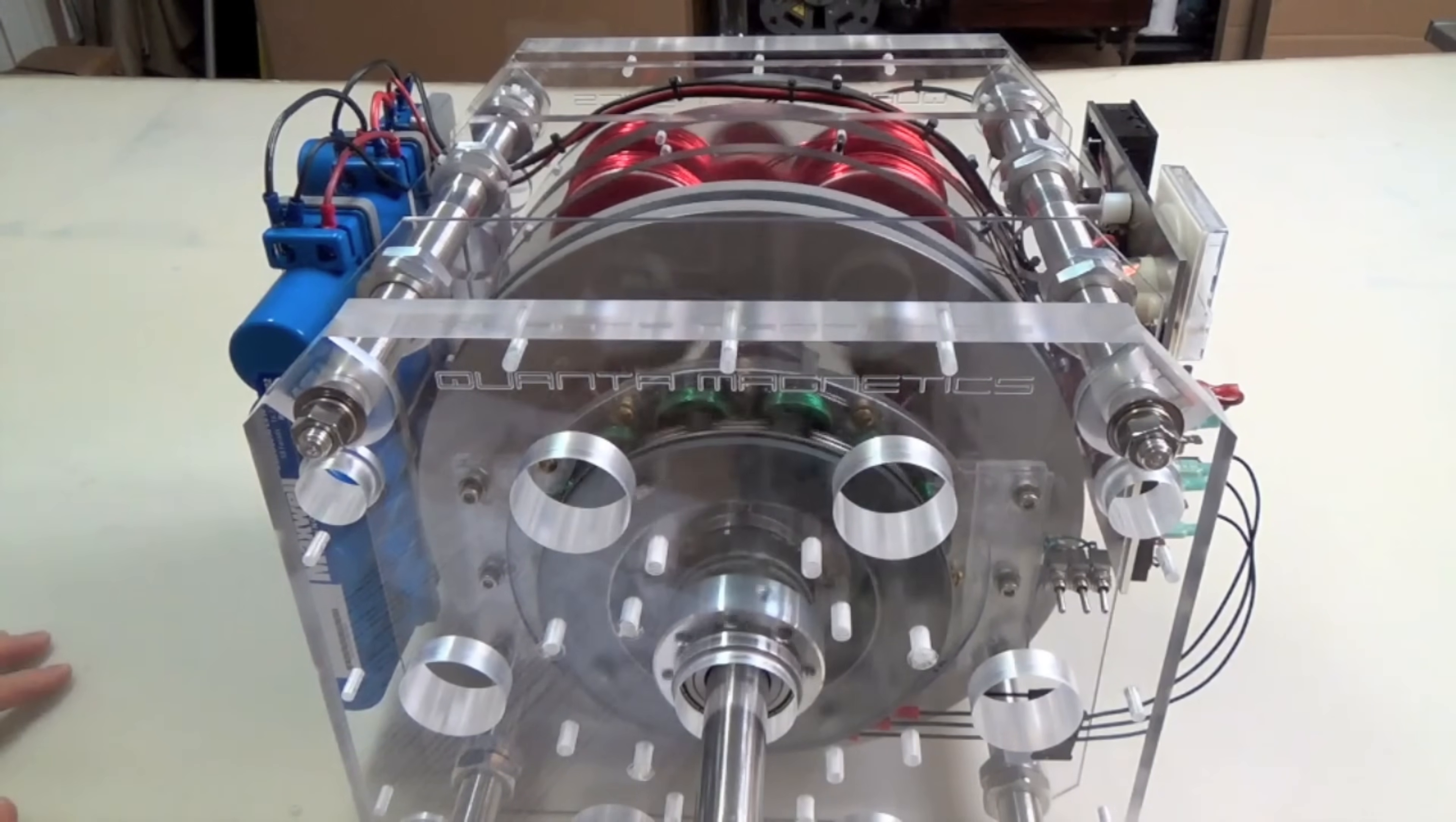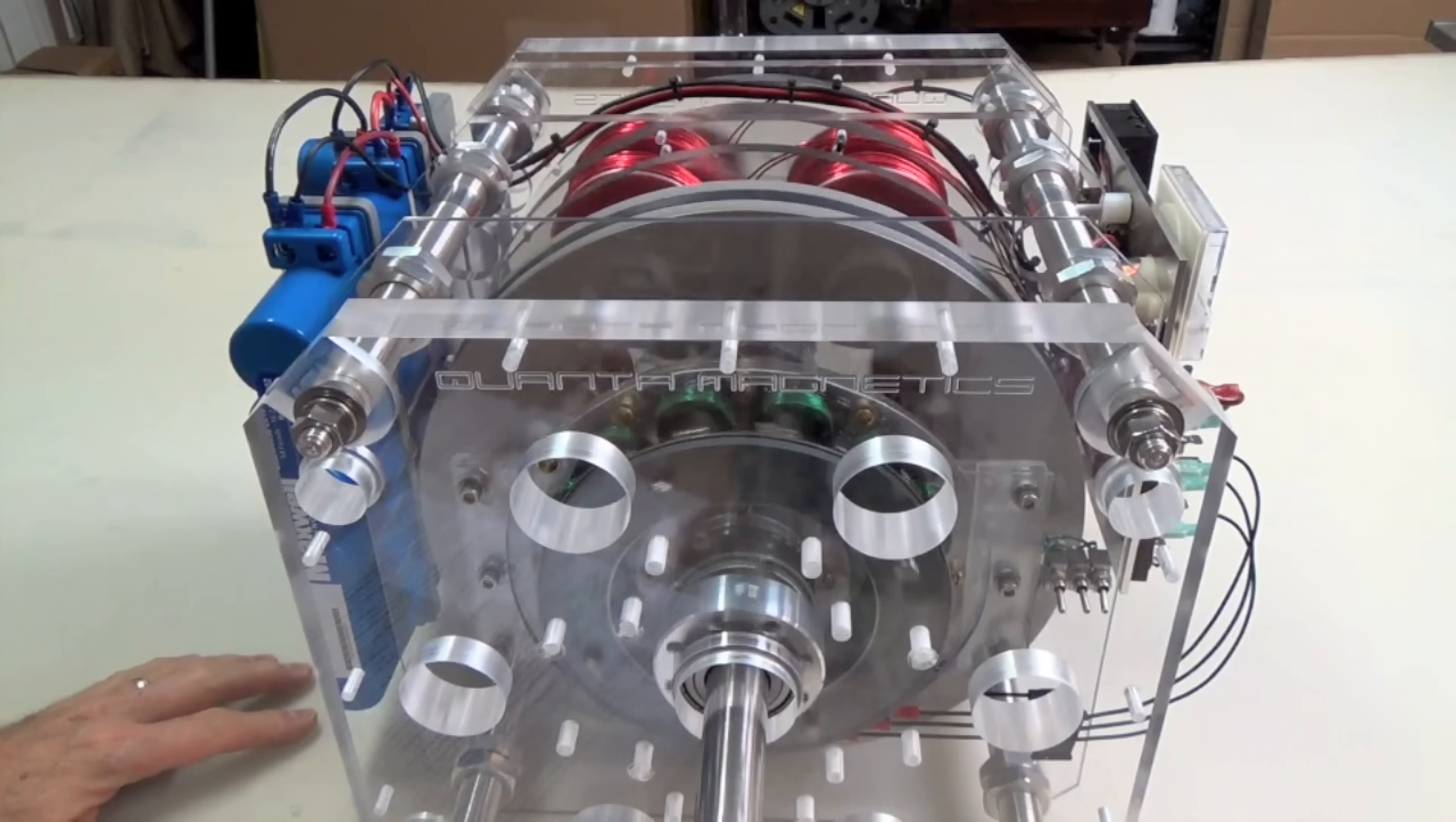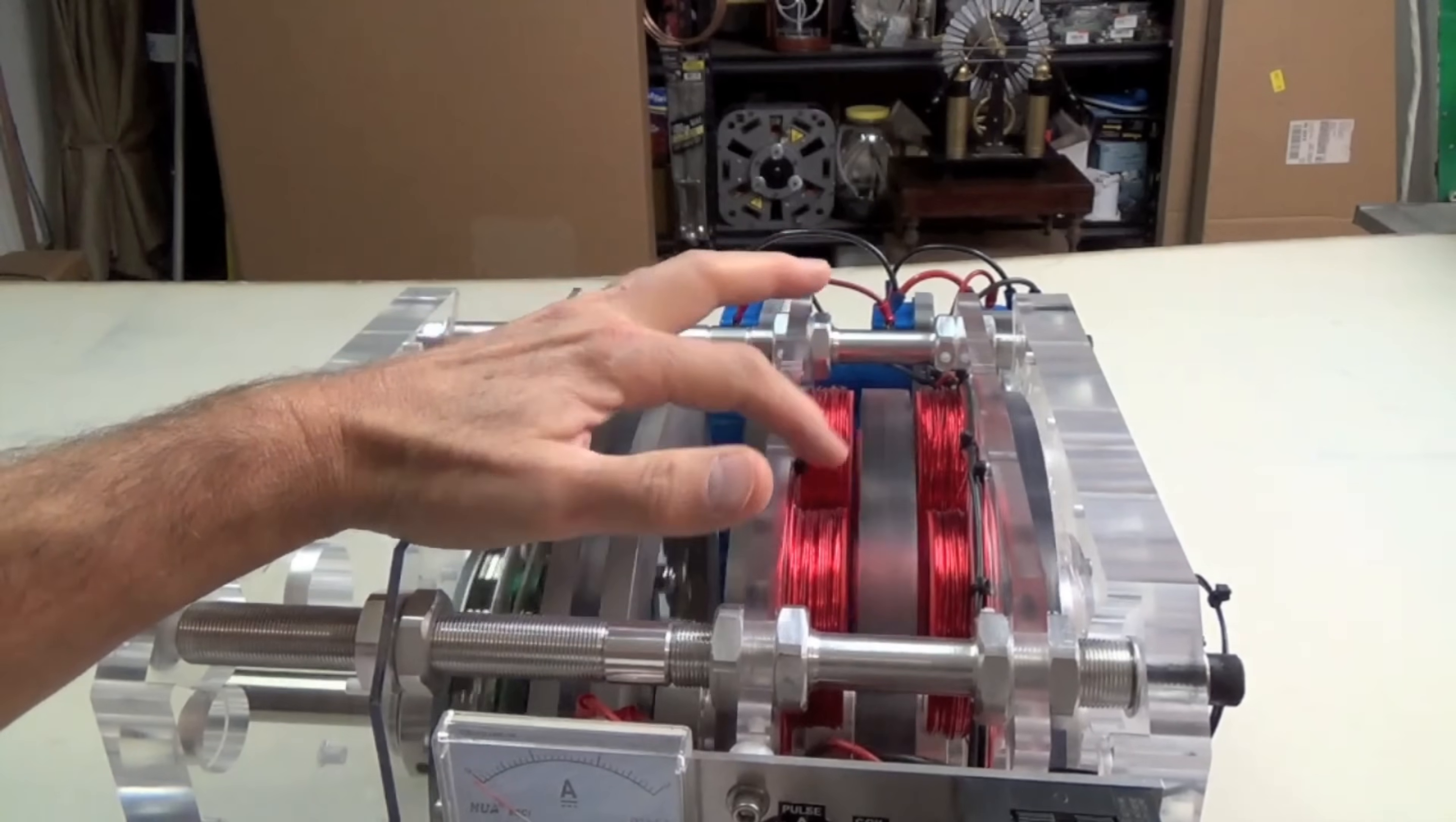Building the magnetic free energy generator was no easy feat. Cromry faced countless obstacles, from skepticism from the scientific community to a lack of funding and resources. But with an unshakable determination and a deep understanding of the principles of electromagnetism, he persevered, pushing the boundaries of what was thought possible.